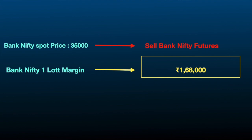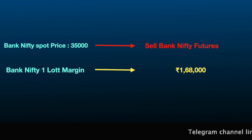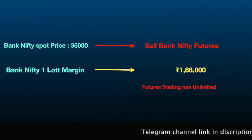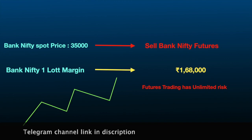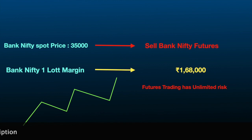We cannot blame the brokers either. The main reason why a broker asks you so much margin is because the risk can be unlimited while trading in futures. From 35,000, Bank Nifty can go to 36,000, 37,000, 40,000 or even more — anything can happen in the stock market. That is the main reason why the broker charges so much margin, as they are bound to follow SEBI rules. To trade with less margin, we need to convert this unlimited risk to limited risk.